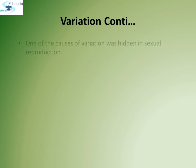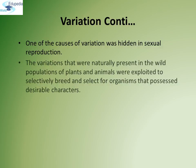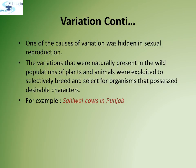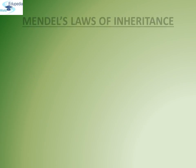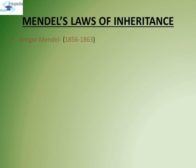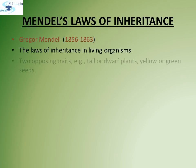One of the main causes of variation was hidden in sexual reproduction. The variations naturally present in wild populations of plants and animals were exploited to selectively breed organisms that possess desirable characters. Without knowing the scientific basis, humans used to grow wild varieties of plants and animals from early species — for example, Sahiwal cows in Punjab. Through artificial selection and domestication from an ancestral wild variety, hybrid varieties were developed. For thousands of years, farmers have been selectively breeding plants and animals to produce more useful hybrids.